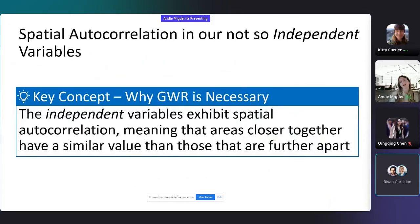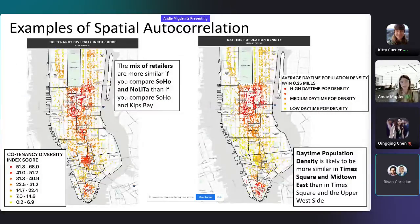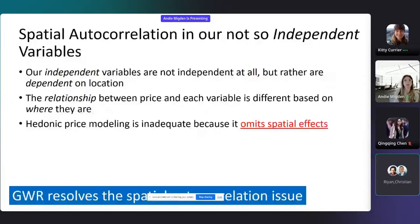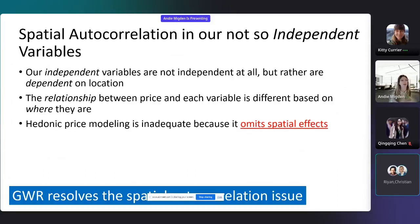However, these variables are not so independent because they exhibit spatial autocorrelation. For example, you can see here that both the mix of retailers and daytime population density are clustered in similar locations. Therefore, our independent variables are not so independent at all, but rather dependent on location. Further, the relationship between price and each variable is different based on where they are. Therefore, hedonic price modeling alone is inadequate because it does not incorporate these spatial effects.